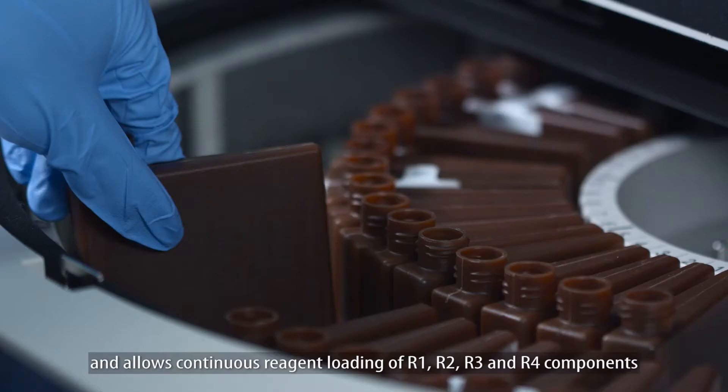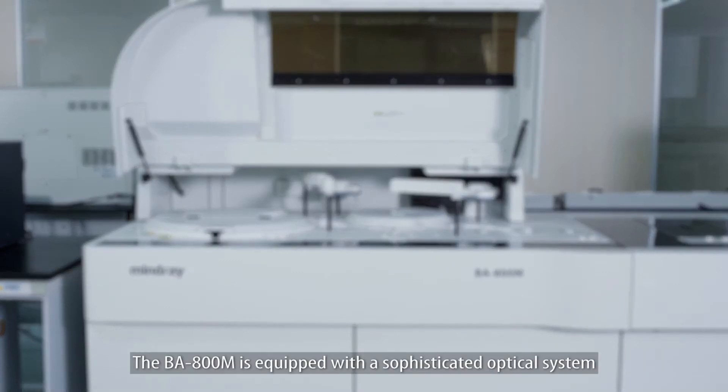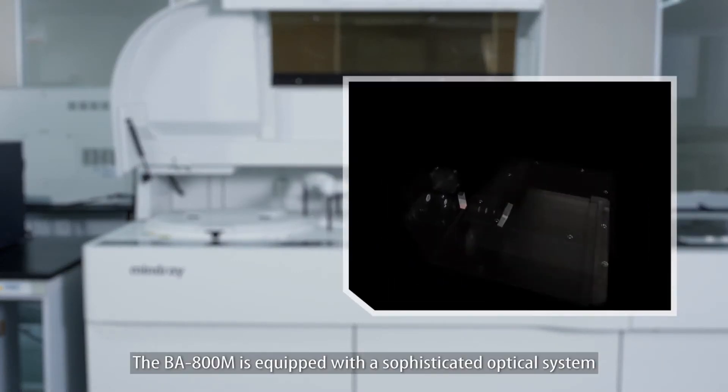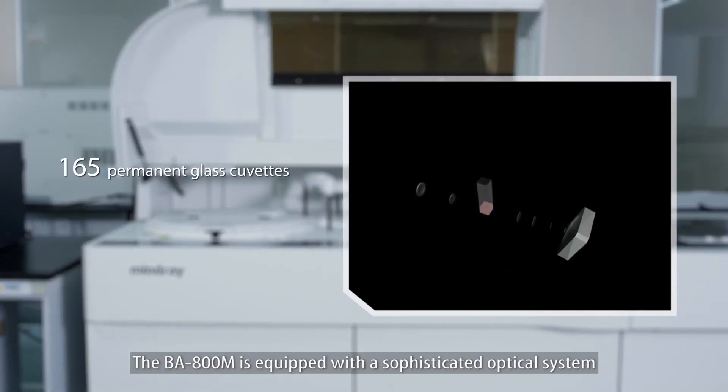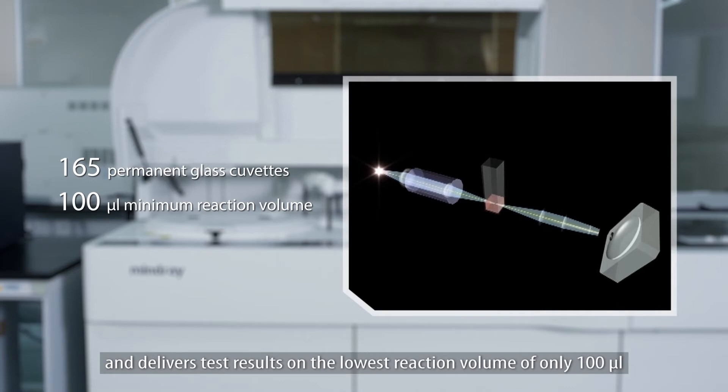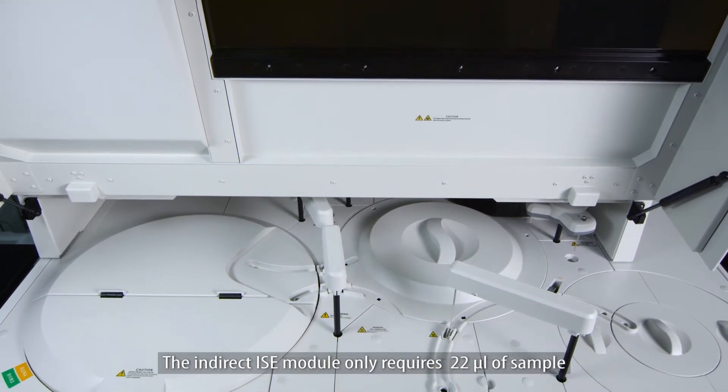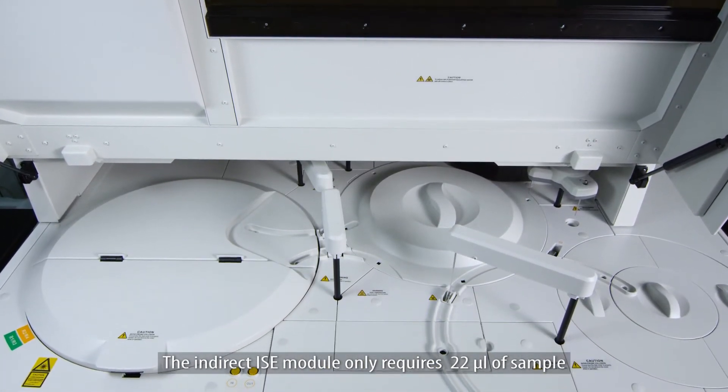The BA800M is equipped with a sophisticated optical system. The reaction disc includes 165 permanent glass cuvettes and delivers test results on the lowest reaction volume of only 100 µL. The indirect ISE module only requires 22 µL of sample.